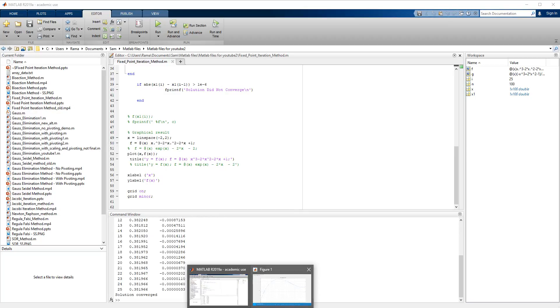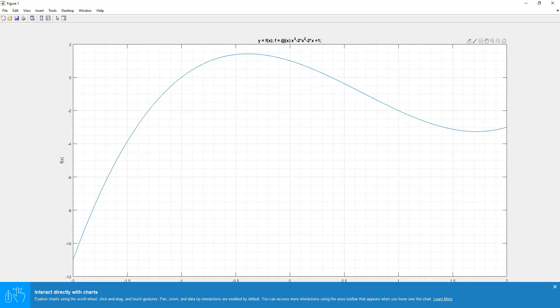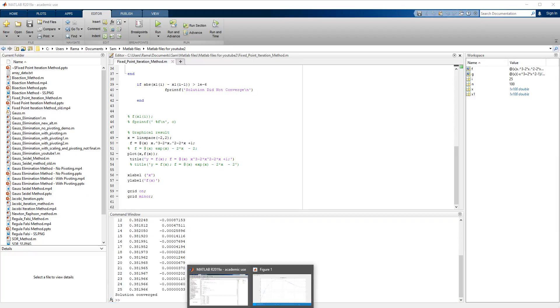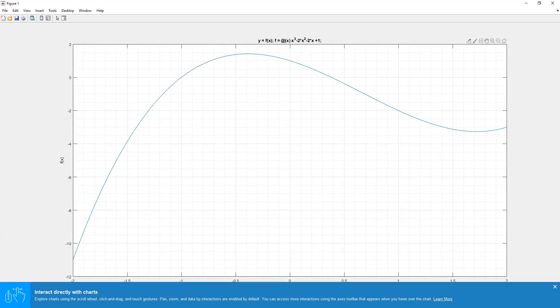We can go and look at the graphical presentation as well. So again there are two roots. The one root we are looking at is 0.381966, which is shown over here. It is close to 0.38384.